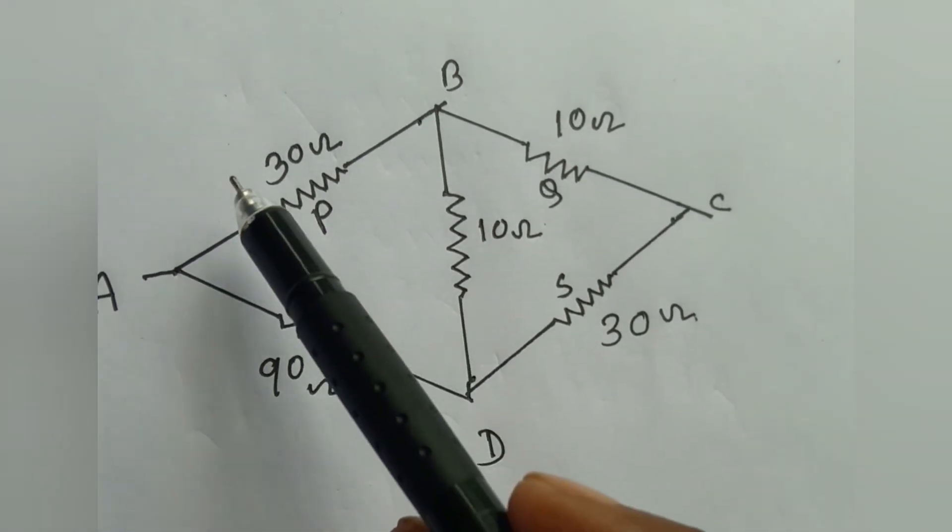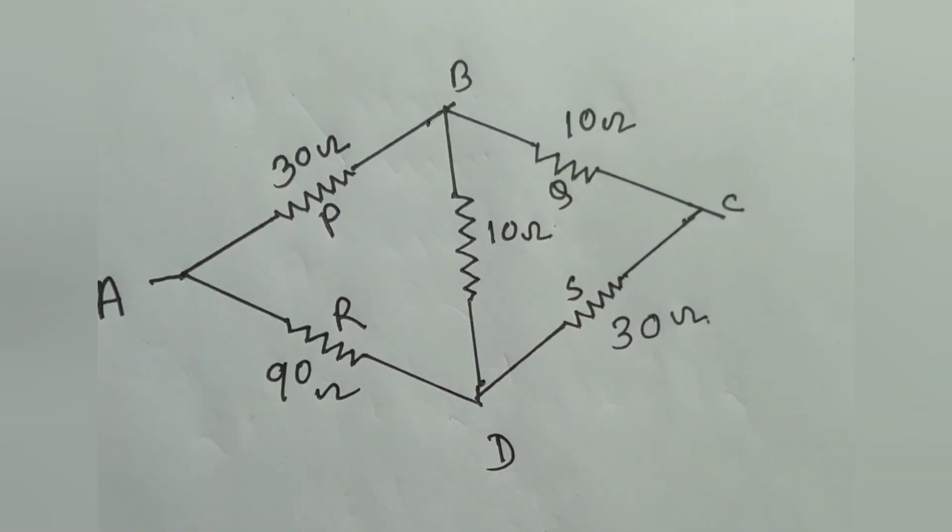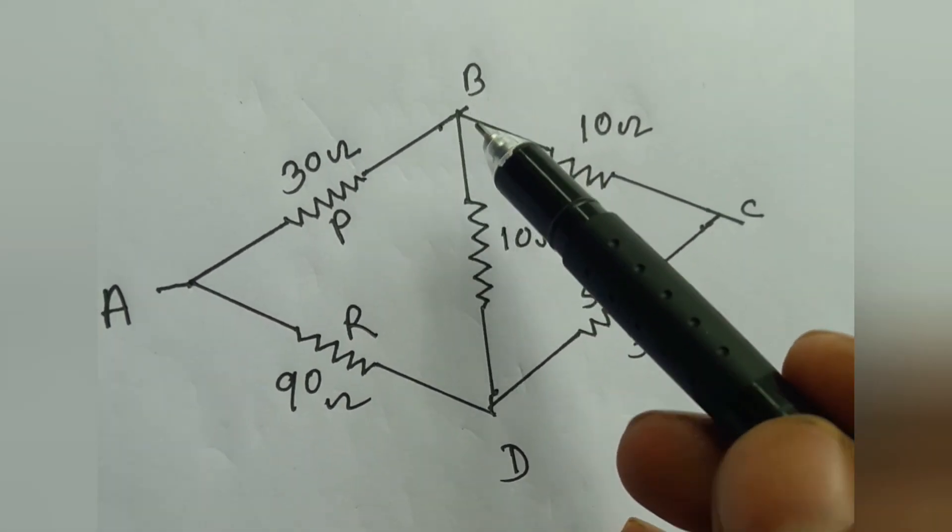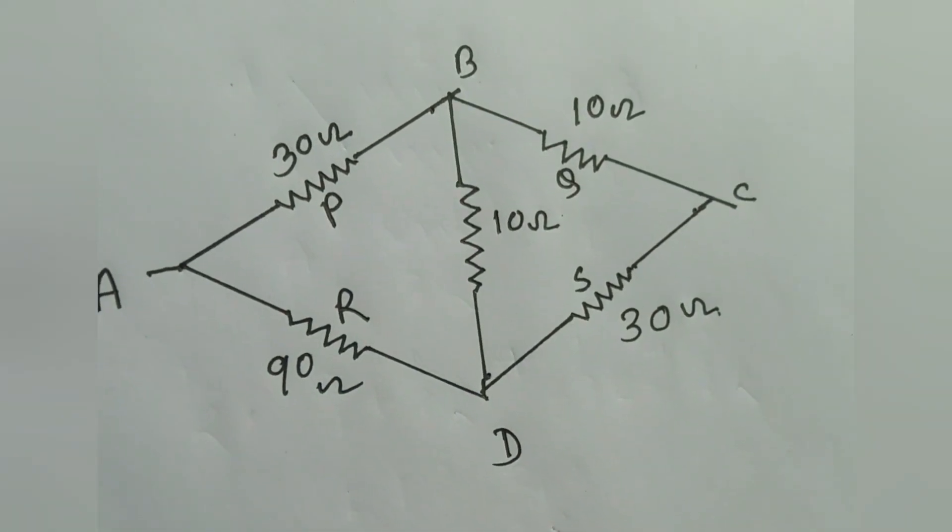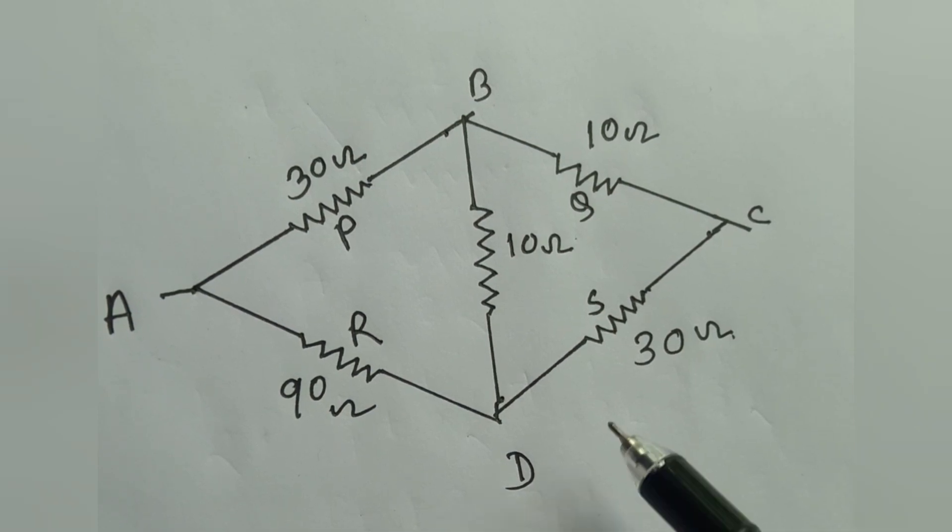We know that if in this circuit P/Q = R/S, then it is called a balanced circuit, and in this condition B and D are at same potential. Therefore no current flows through B to D.